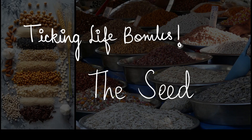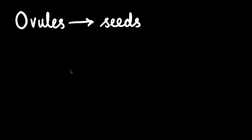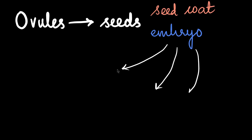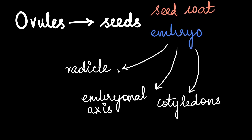In this video we are going to look at the anatomy of a seed. Now where do seeds come from? Seeds are basically ovules post-fertilization. Seeds themselves have a seed coat and embryo. The embryo has three structures: the radicle, the embryonal axis, and cotyledons. There could be one or two cotyledons, and based upon whether it is one or two, we have monocot and dicot seeds respectively.